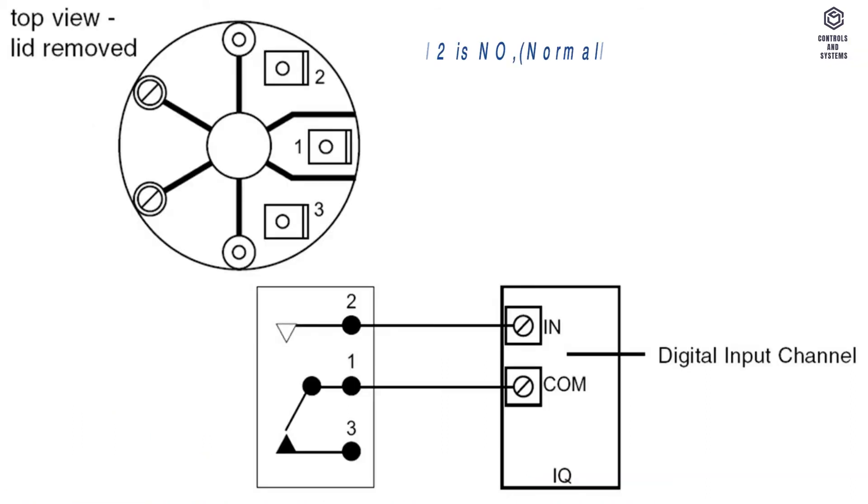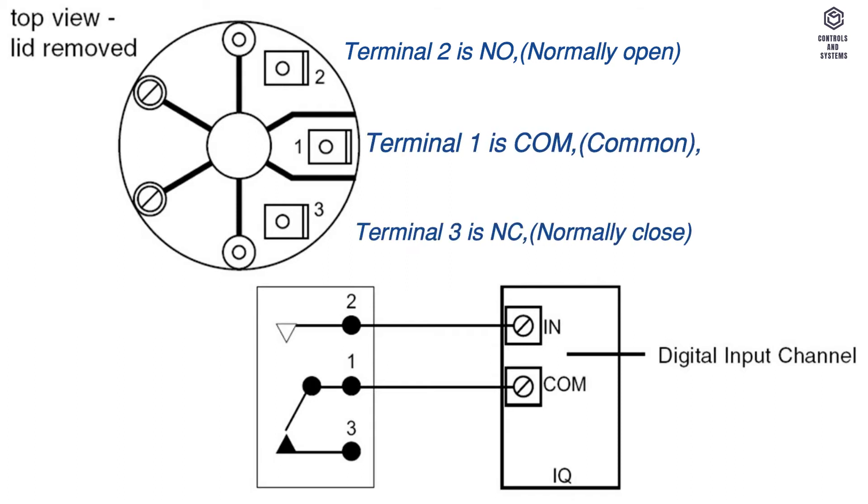Connections: terminal 2 is NO, normally open; terminal 1 is common; terminal 3 is NC, normally close.